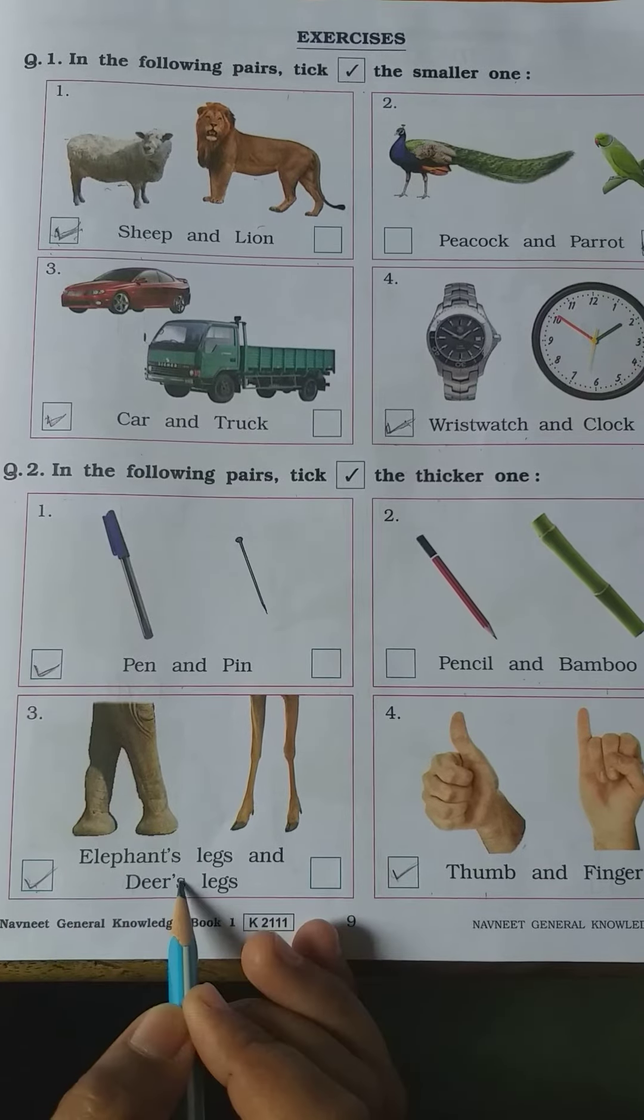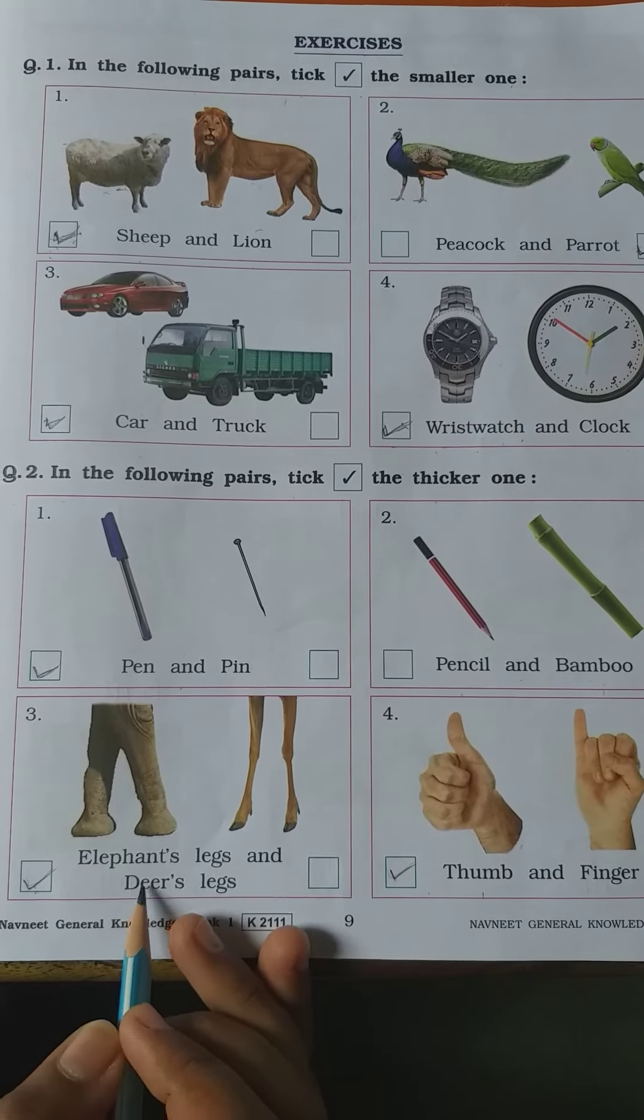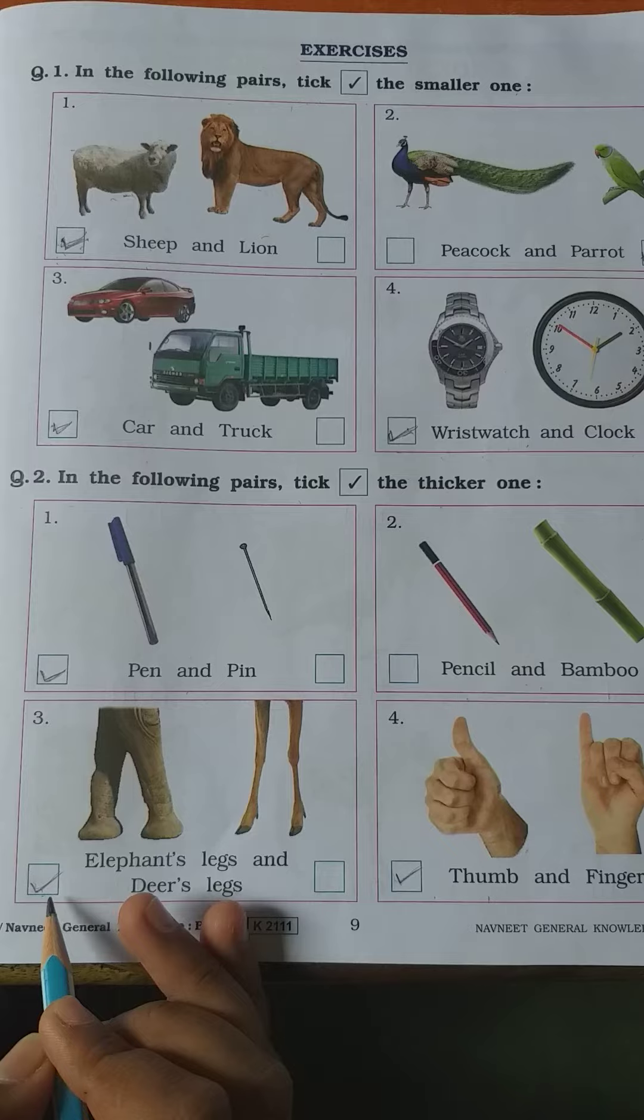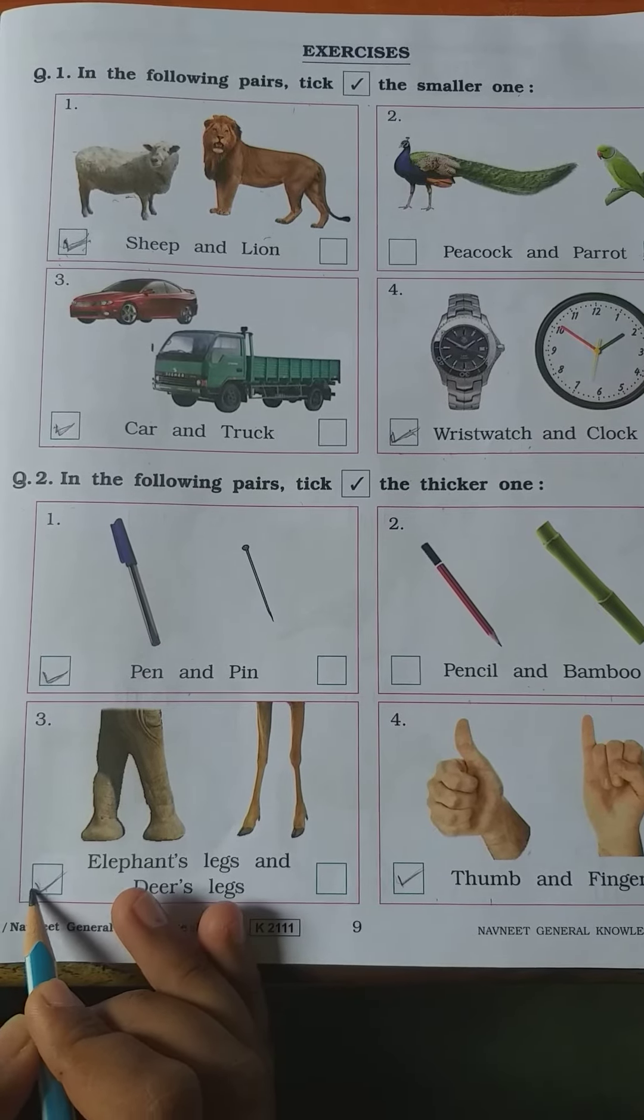Number 3: elephant's leg and deer's leg. Elephant's leg is thicker, tick in elephant's legs.